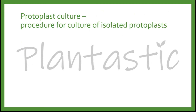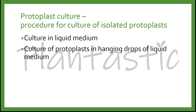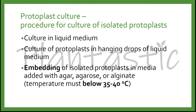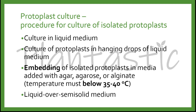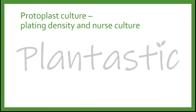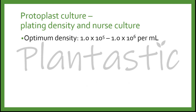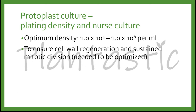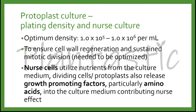There are several methods for culturing isolated protoplasts: in liquid medium, in hanging drops of liquid medium, or embedded in media with agar, agarose, or alginate — but the temperature must be below 35 to 40 degrees Celsius. You may also employ dual medium, which is liquid over semi-solid medium. The plating density and nurse culture are usually optimized at 1.0 × 10⁵ to 1.0 × 10⁶ per milliliter. This is to ensure cell wall regeneration and sustained mitotic division, which need to be optimized from species to species. The nurse cells utilize nutrients from the culture medium, and dividing protoplasts also release compounds such as amino acids into the medium, contributing to the nurse effect.